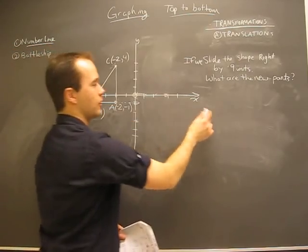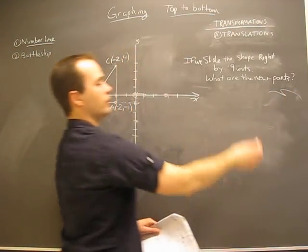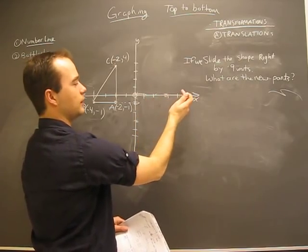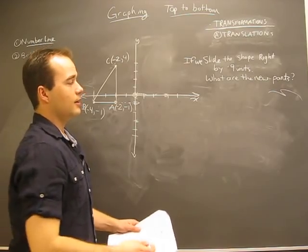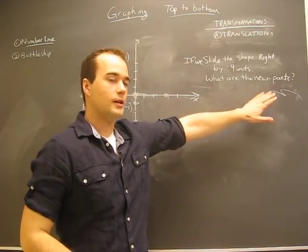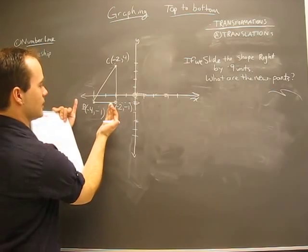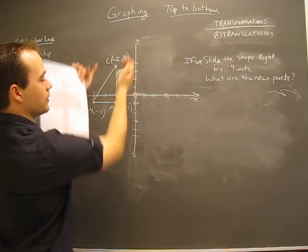But we wouldn't even be able to draw it because nine would be over there somewhere. I mean, one, two, three, four, five, six, seven, eight, nine. I'm not going to draw it. The question says what are the new points, so what they're asking for is what's the new A, what's the new B, what's the new C.